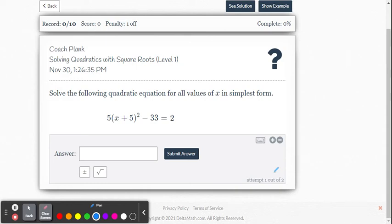This example for solving quadratic equations using the square root method. This is level one within the Delta Math online system. So the first thing we want to do is we want to isolate the binomial square by itself.